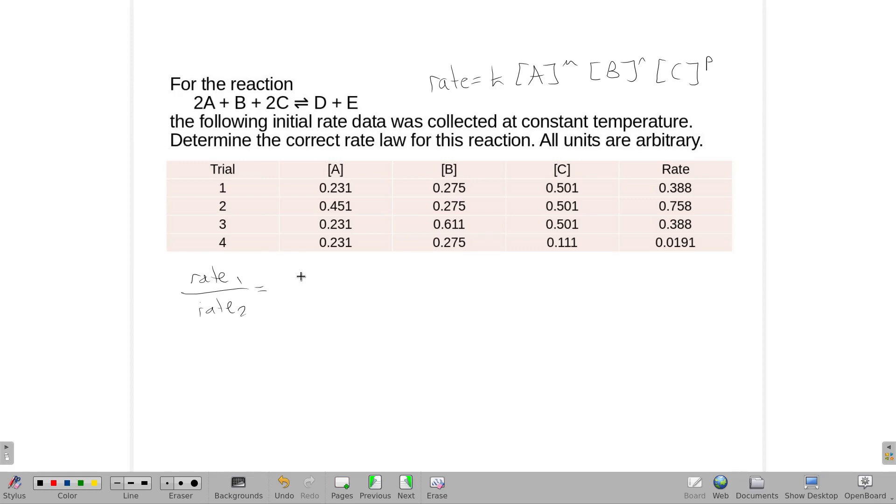And the rate for 1 is 0.388, the rate for 2 is 0.758. Technically, both of them will have our Ks and the Bs and the Cs, but since the C and the B are both constant there, they're both 0.5 and 0.275, they would cancel out, and so would the K. So the only thing that's going to be on this side is the two different A values, so 0.231 and 0.451, and I'm going to pull that M out.